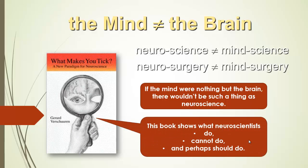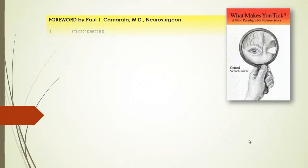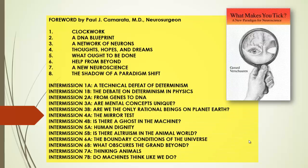This book shows you what neurosciences do, what they cannot do, and perhaps should do. These are the eight chapters in the book.